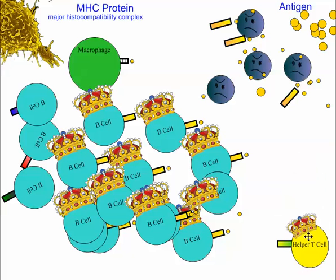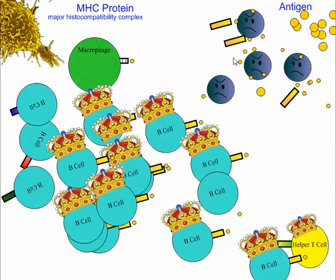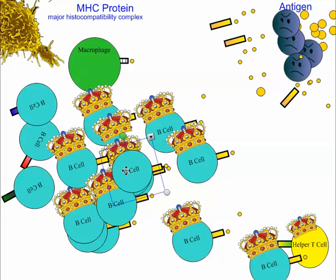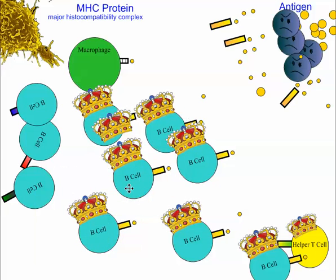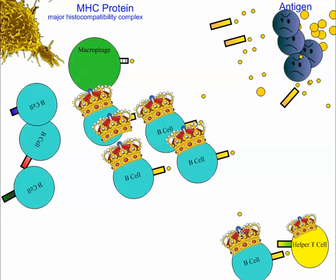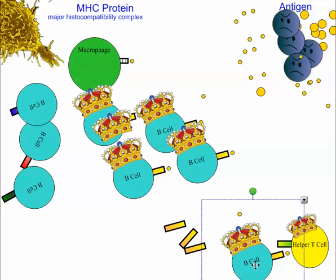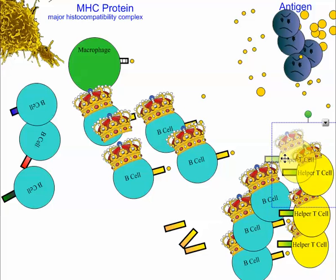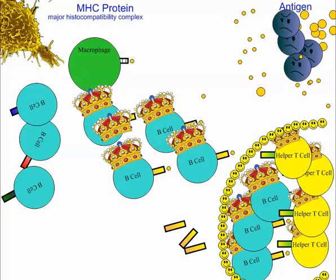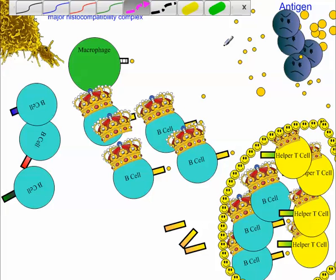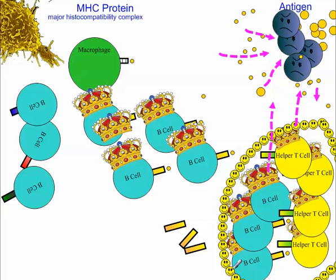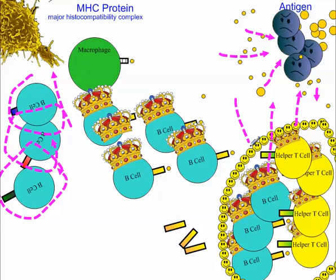After everything is done, some of these helper T cells and B cells remain. When the pathogens get destroyed, we don't need all these B cells — a lot of them get broken down. But we can maintain a pretty high concentration of antibodies in the bloodstream, and some leftover cells stay around. These are called memory cells. Memory cells stick around, and this is the basis of immunity and immune response. Next time these exact same pathogens come to visit, they'll interact with these memory cells. We already have a high concentration of B cells and antibodies, so we can mount a pretty quick response.